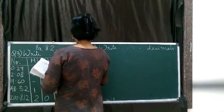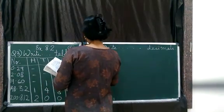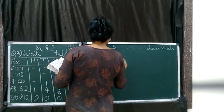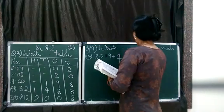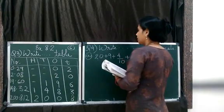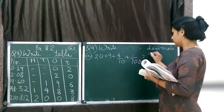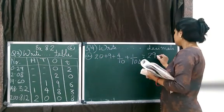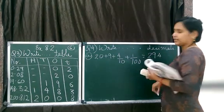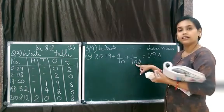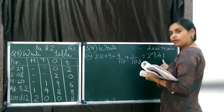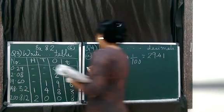The first one: 20 plus 9 plus 4 by 10 plus 1 by 100. Very simple. 20 plus 9 gives you 29. 4 by 10, 4 in the tenth place, and 1 in the hundredth place. So 29.41. This completes A.